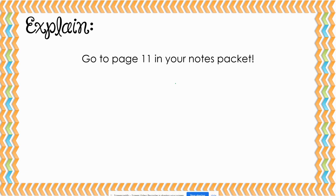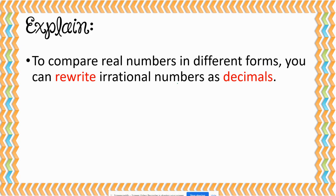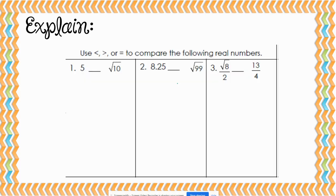Today we are going to learn how to compare and order irrational numbers. You should be on page 11 in your notes packet. To compare real numbers in different forms, you can rewrite irrational numbers as decimals. You might want to rewrite them as decimals rounded to about the nearest hundredths place. Let's look at some examples.